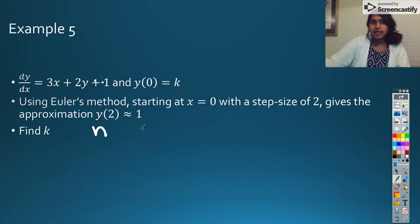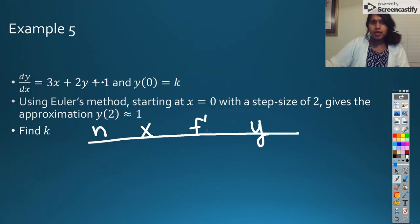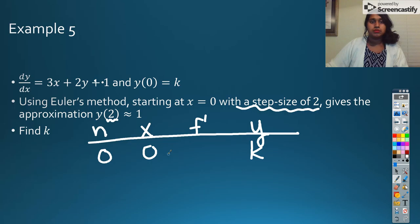So we know that we need an n. We know that we have x. We know that we have f prime, or in this case, the dy dx. And we know that we have a y. And so my initial value tells me my x is 0, and my y is k. We don't know what it is. It's currently a placeholder. And I know that we're going to take step sizes of 2. And we're going to go all the way until 2. So if I do 0 plus 2, that becomes 2. So I really only need one row.